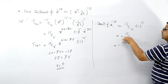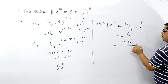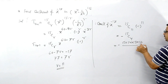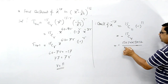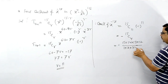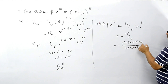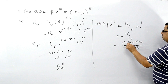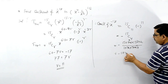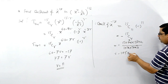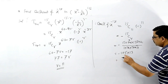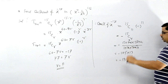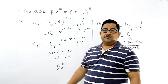15C4 को calculate करते हैं: numerator में 15 × 14 × 13 × 12, denominator में 1 × 2 × 3 × 4. 12 cancel हो जाता है, 14 = 7×2, so this is 7 × 105 = 1365. Therefore the final answer is minus 1365.